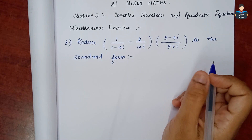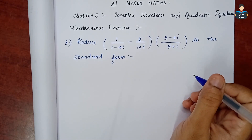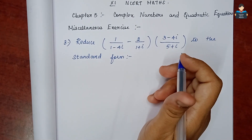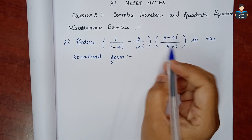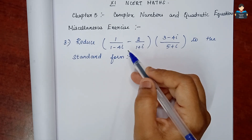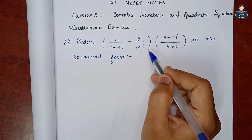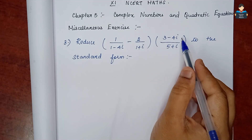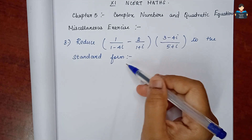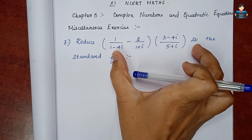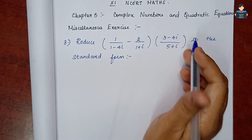Hello everyone, welcome to our channel. In this video we learn standard NCERT Math Chapter 5 - Complex Numbers and Quadratic Equations, Miscellaneous Exercise, third sum: reduce 1/(1-4i) minus 2/(1+i) multiplied by (3-4i)/(5+i) to the standard form.